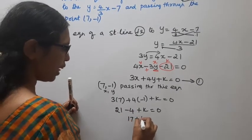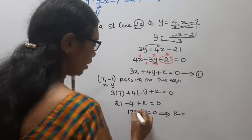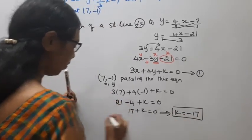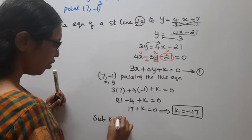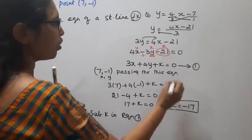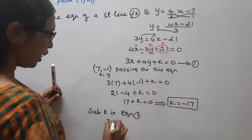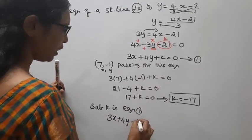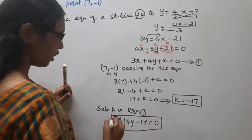Now what is 21 minus 4 is 17 plus k equal to 0, that implies k is minus 17. Substitute k in equation 1, the k value in equation 1 substitute: 3x plus 4y, k value minus 17 equal to 0. This is the answer.